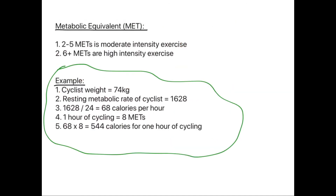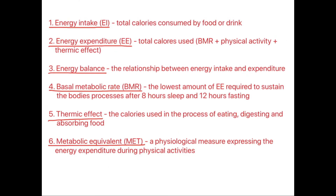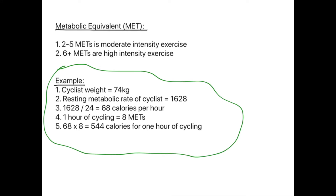Metabolic equivalent (MET) is the physiological measure expressing energy expenditure during physical activities. Two to five METs is considered moderate intensity exercise and anything over six METs is considered high intensity exercise. For example, a cyclist weighing 74 kilos has a resting metabolic rate of 1628 calories per 24 hours, which works out at 68 calories per hour resting. One hour of cycling is worth eight METs, so to calculate calories burned you multiply his hourly resting metabolic rate of 68 by the MET value of eight, giving 544 calories for one hour of cycling.